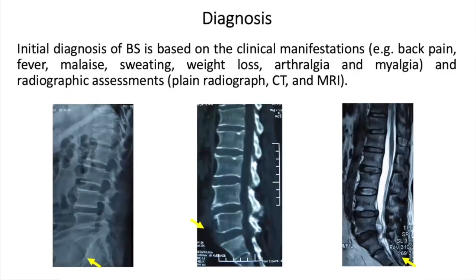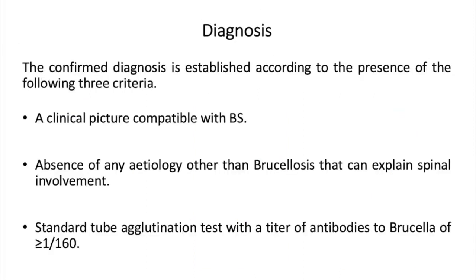Radiographic assessments include plain radiograph, CT, and MRI. The confirmed diagnosis is established according to all three of the following criteria: a clinical picture compatible with brucellar spondylodiscitis; absence of any etiology other than brucellosis that can explain spinal involvement; and a standard agglutination test revealing a titer of antibodies to brucella of more than 1 to 160.